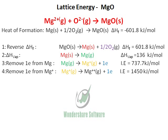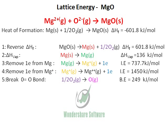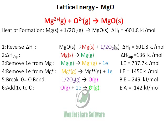For the oxygen, we need to break the oxygen-oxygen bond, so that gives us the bond energy. Since we only have one atom of oxygen, we take half of the literature value of the bond energy. Then we add two electrons to this oxygen, which gives us electron affinity 1 and electron affinity 2.